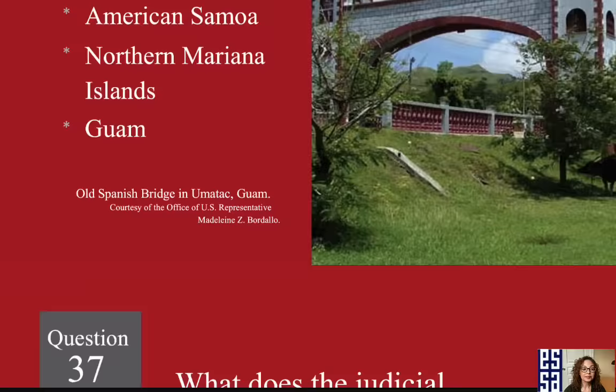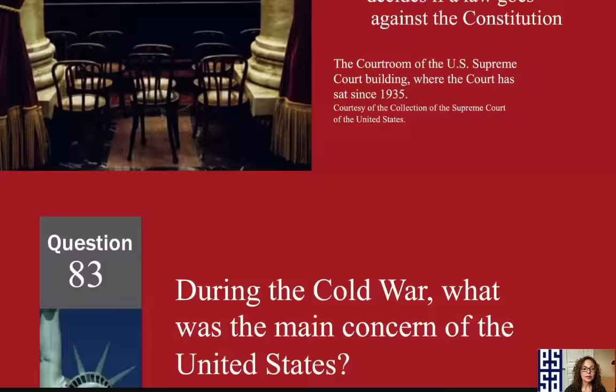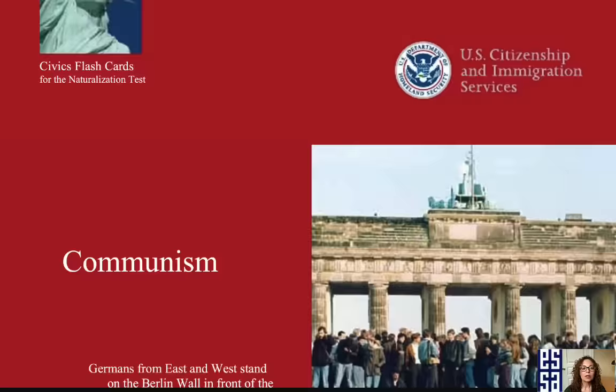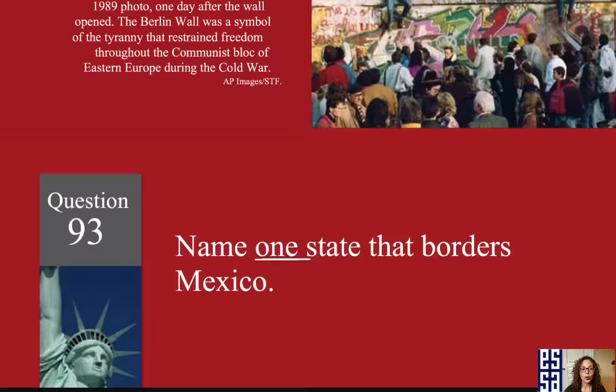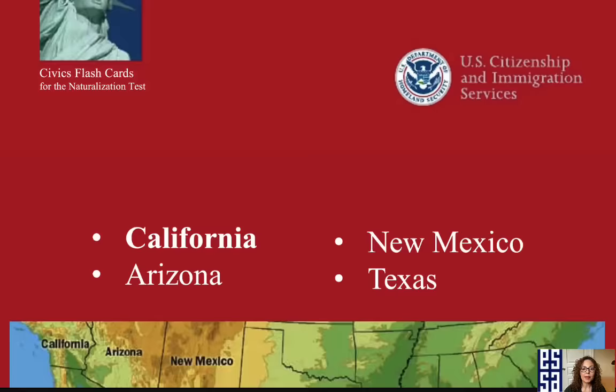What does the judicial branch do? The judicial branch reviews laws. During the Cold War, what was the main concern of the United States? Communism was the main concern during the Cold War. Name one state that borders Mexico. California.